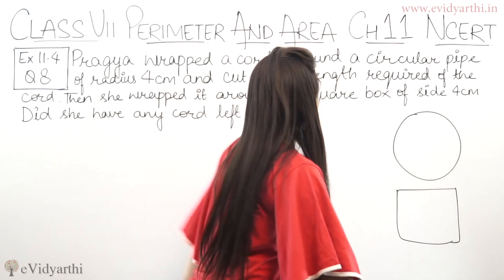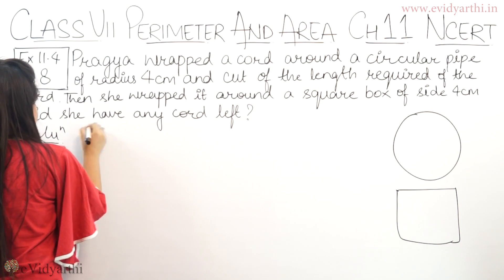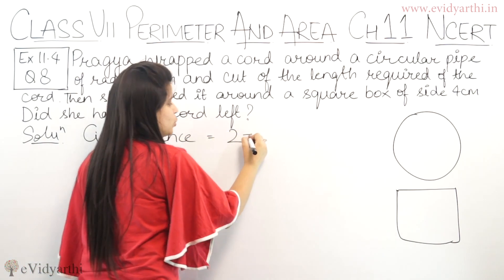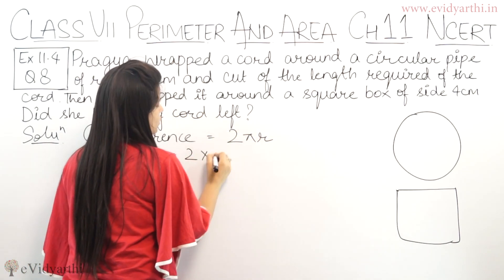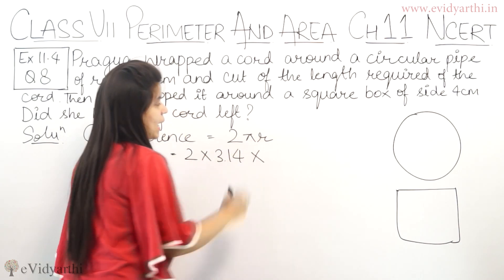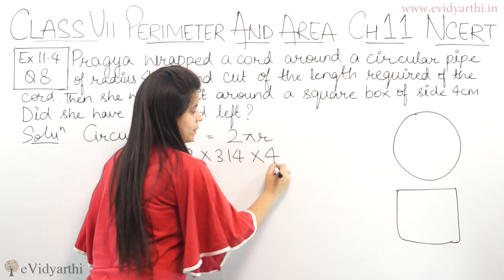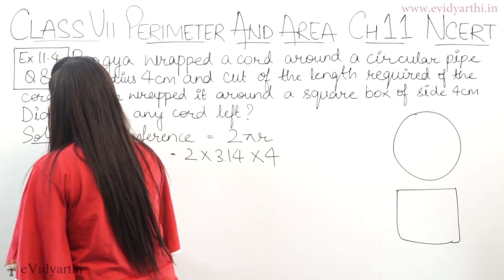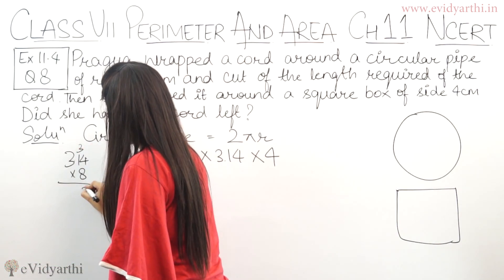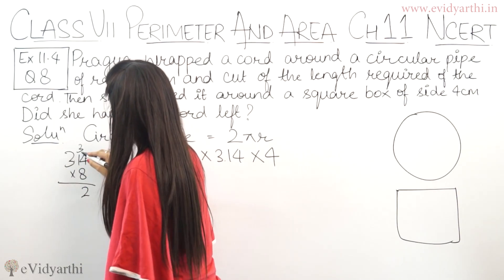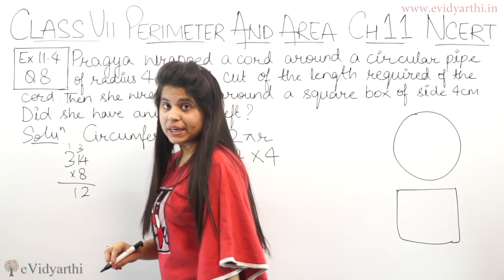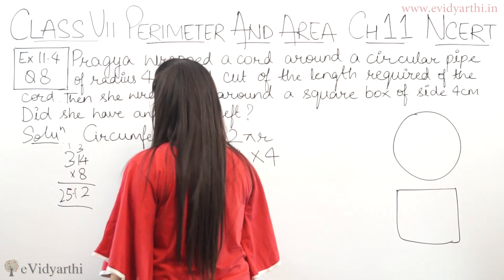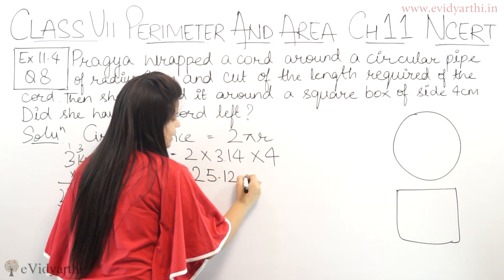We will find the circumference of the pipe, which will be equal to 2πR. So, 2 × 3.14 × 4. Radius given is 4. So 2 × 4 = 8, and 3.14 × 8: 8 × 4 = 32, 8 × 1 = 8, plus 3 is 11; 8 × 3 = 24, plus 1 is 25. With the decimal point placed correctly, this will be 25.12 cm.